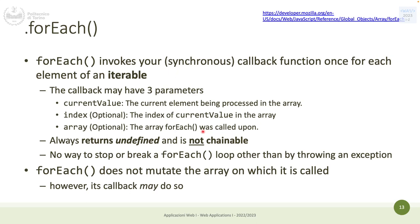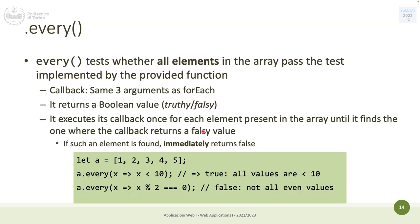'every' tests whether all elements in an array satisfy a condition. For example, with the array [1, 2, 3, 4, 5], you test whether each element is less than 10. Since one is less than 10, two is less than 10, and so on, the result is true because all elements satisfy the condition.